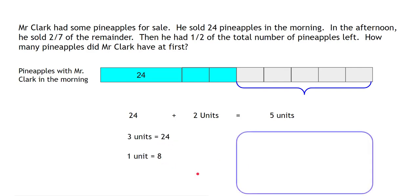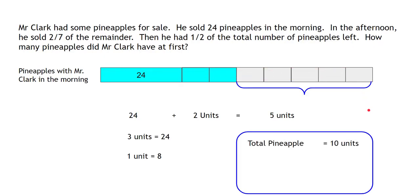Three units represents 24 pineapples, so one unit is 24 divided by 3, which gives you 8. Now to find the total number of pineapples Mr. Clark had at the beginning — the total is represented by 10 units in all (5 units on each half). So the total pineapples is 10 units, and since one unit equals 8 pineapples, 10 times 8 gives us 80 pineapples. That's the answer.